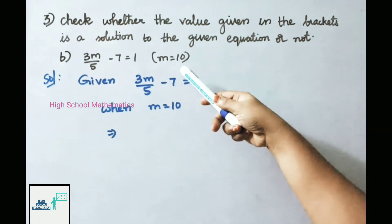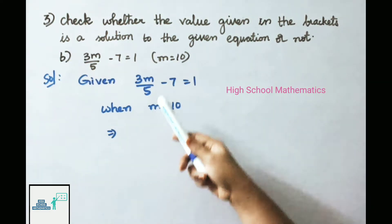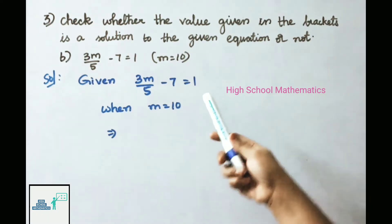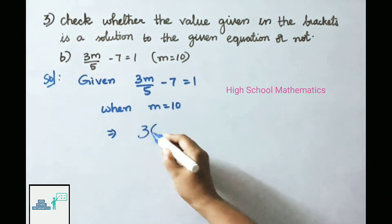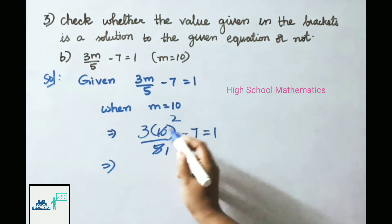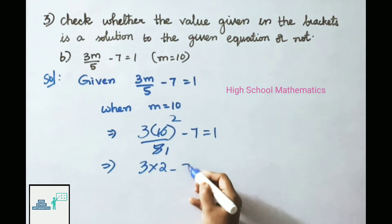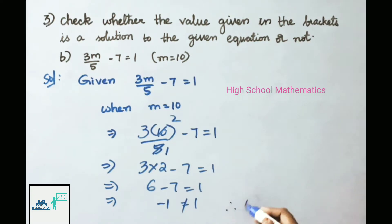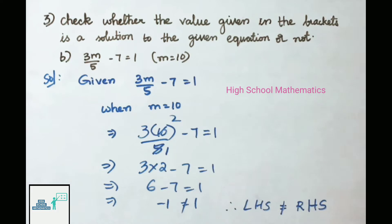Part B: 3m/5 - 7 = 1, when m = 10. Substituting m = 10: LHS = 3 × 10 ÷ 5 - 7 = 30 ÷ 5 - 7 = 6 - 7 = -1. RHS = 1. Since -1 ≠ 1, LHS is not equal to RHS. Therefore m = 10 is not a solution for the given equation.